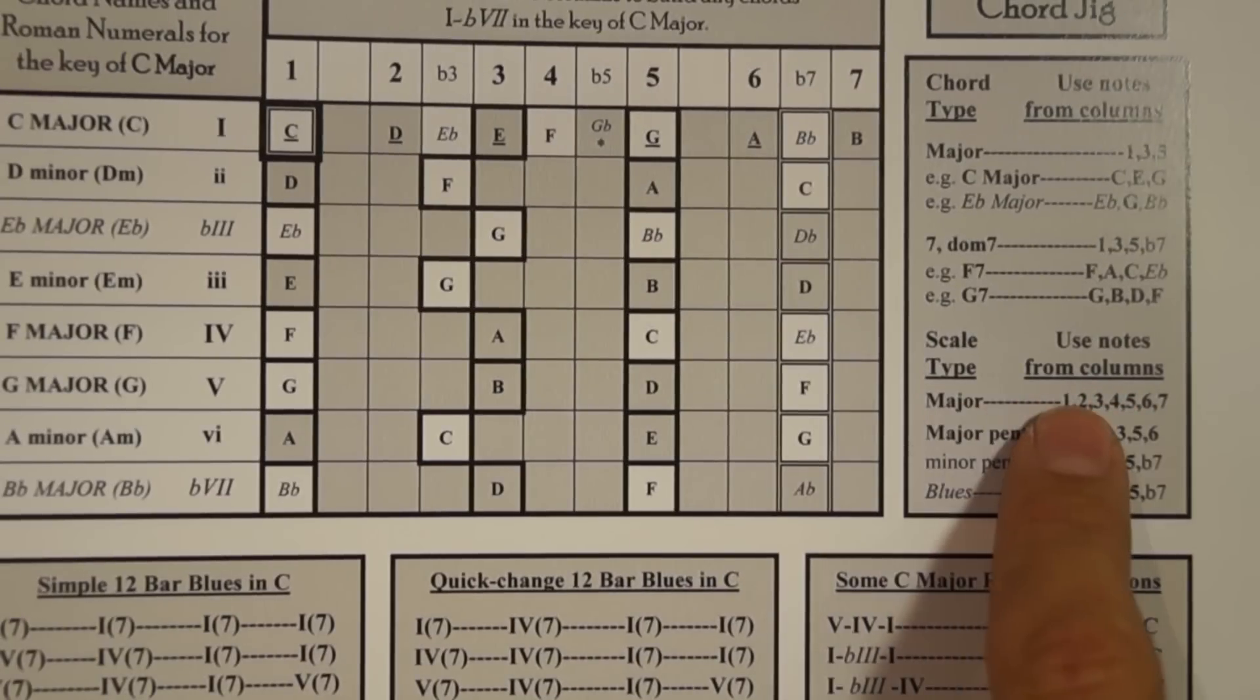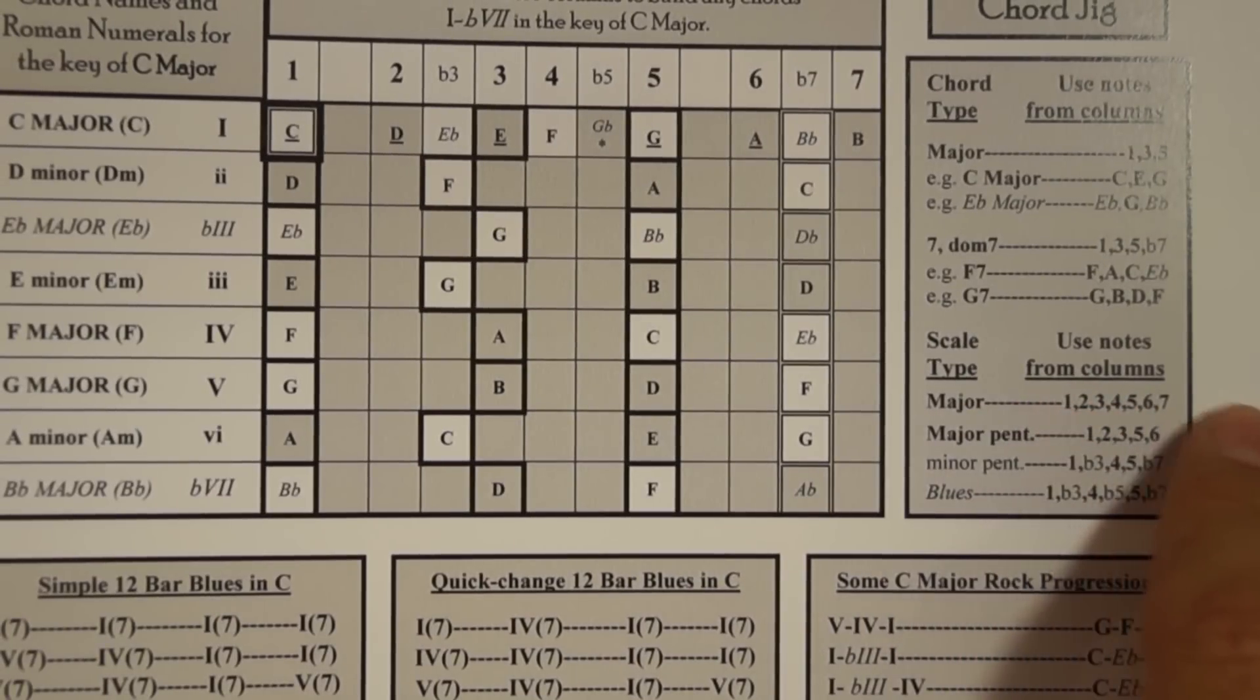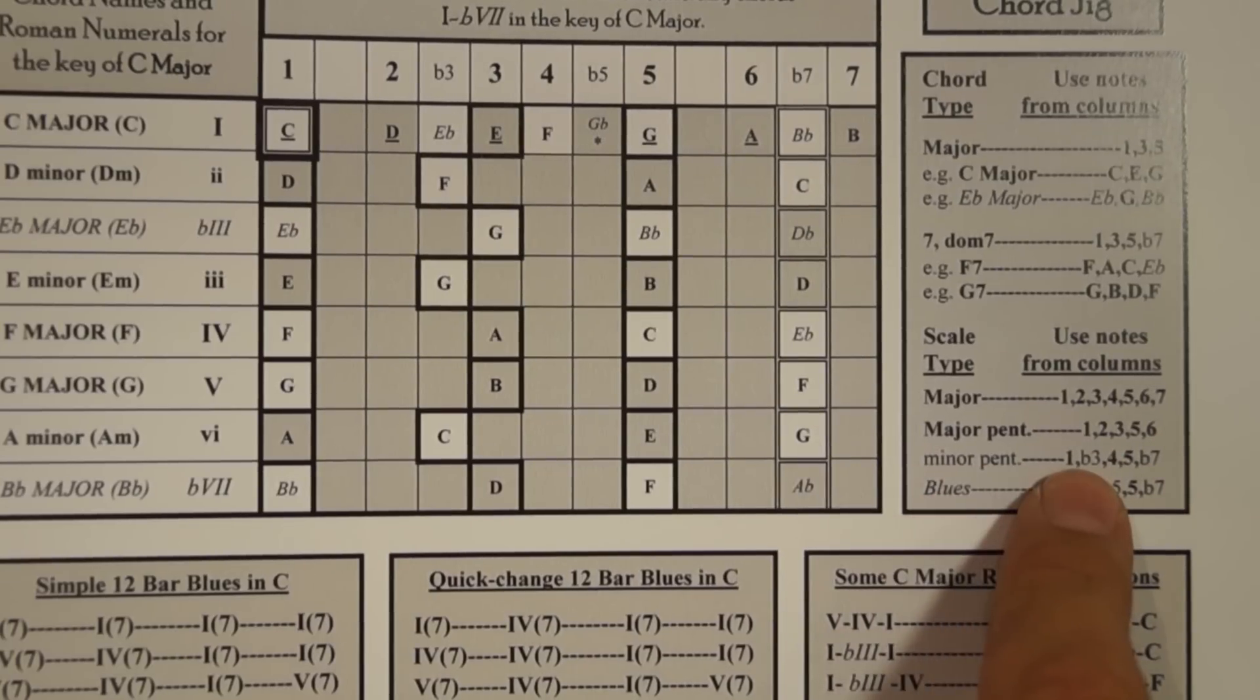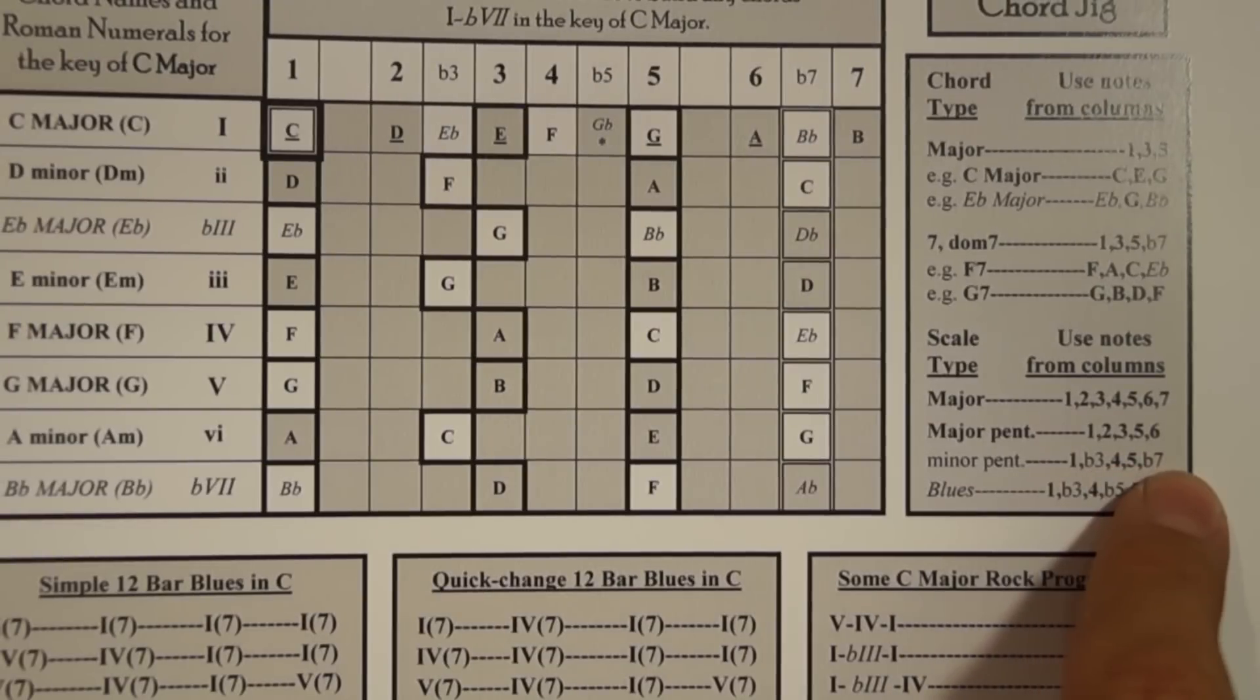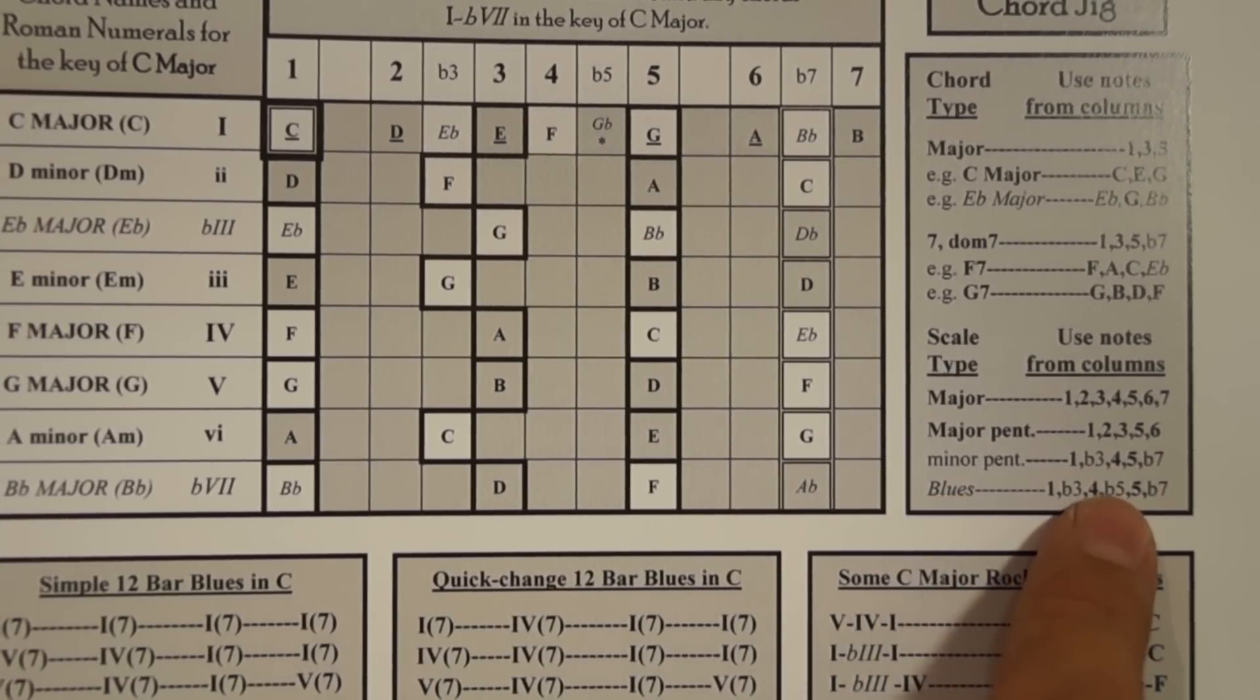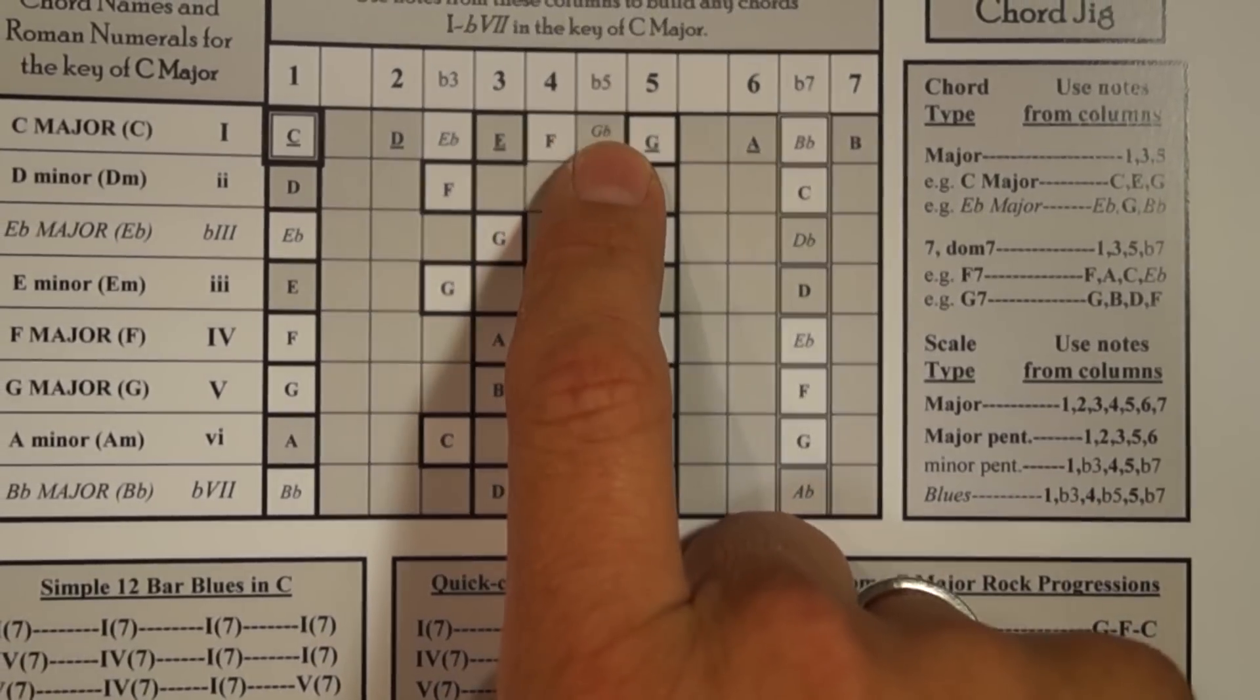So if you want to know what the scales are made of, if you look on the scale chart here, you can see major scales are the one, two, three, four, five, six, seven columns. Major pentatonic is one, two, three, five, six. Minor pentatonic is one, flat three, four, five, flat seven. And then the blues is going to add this flat five note or a G flat note.